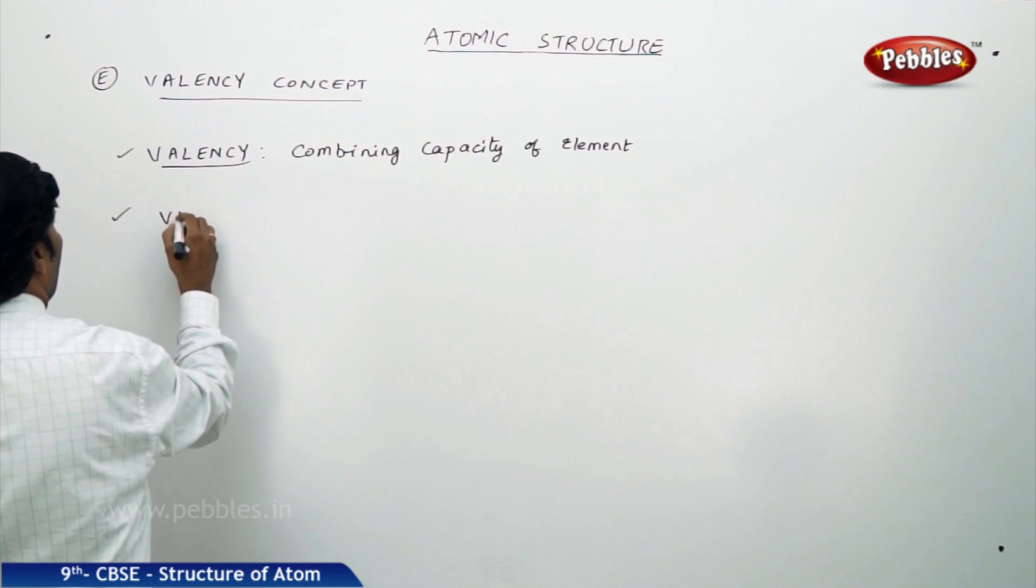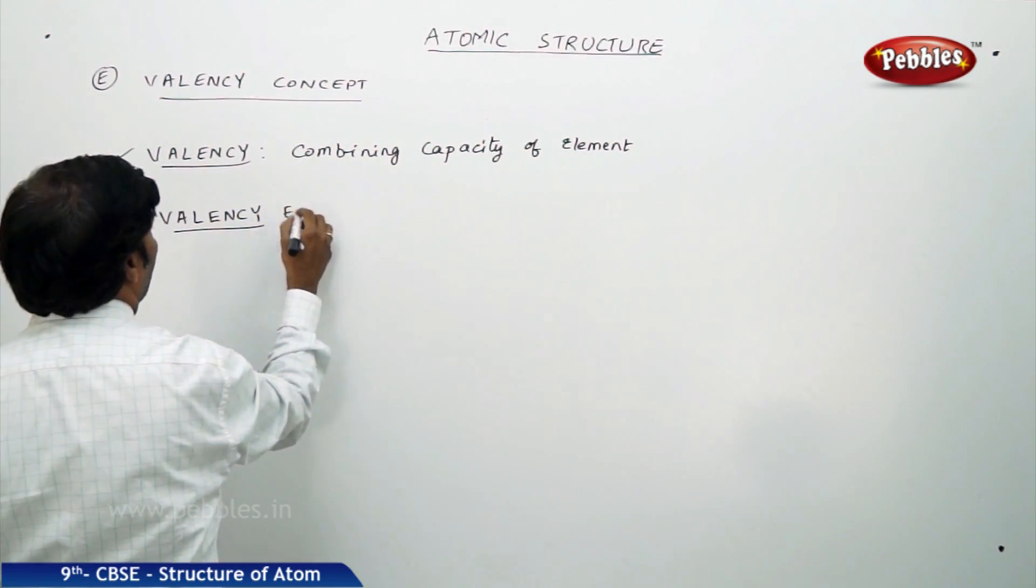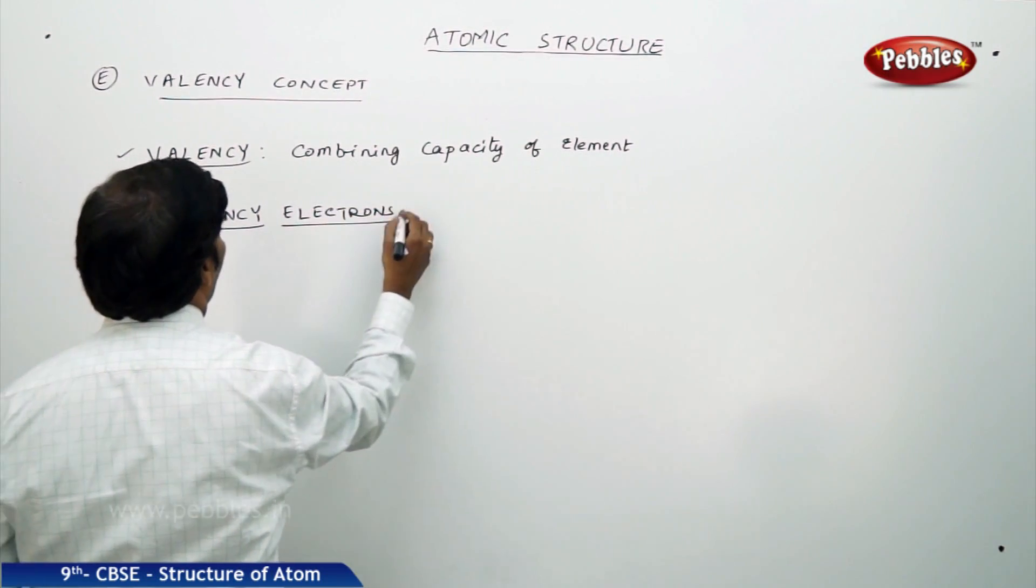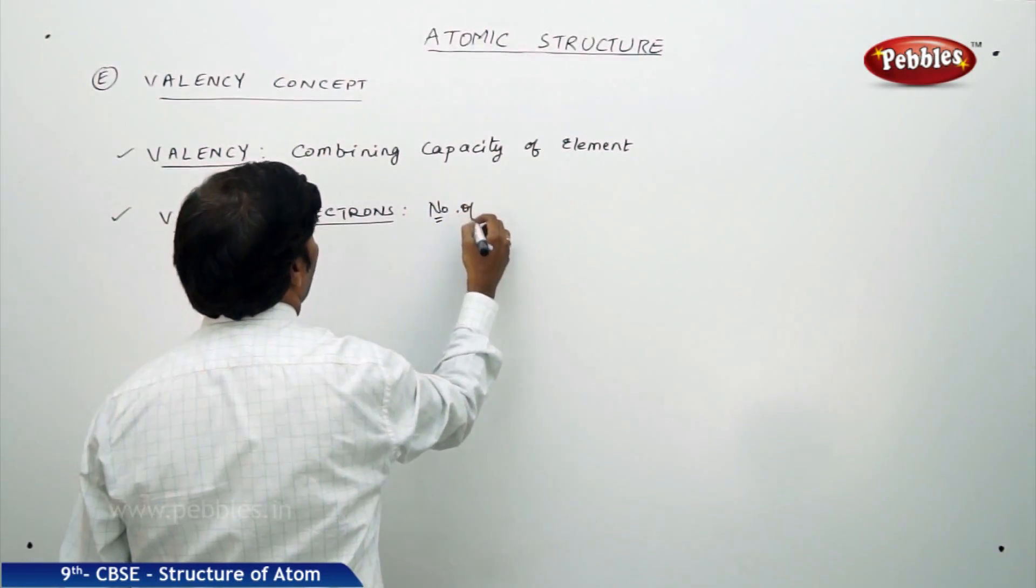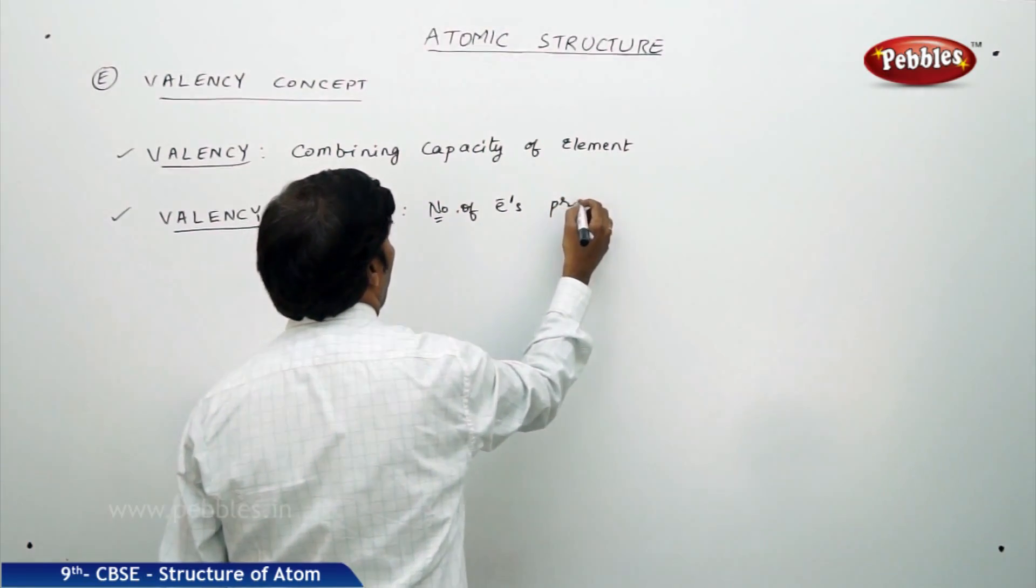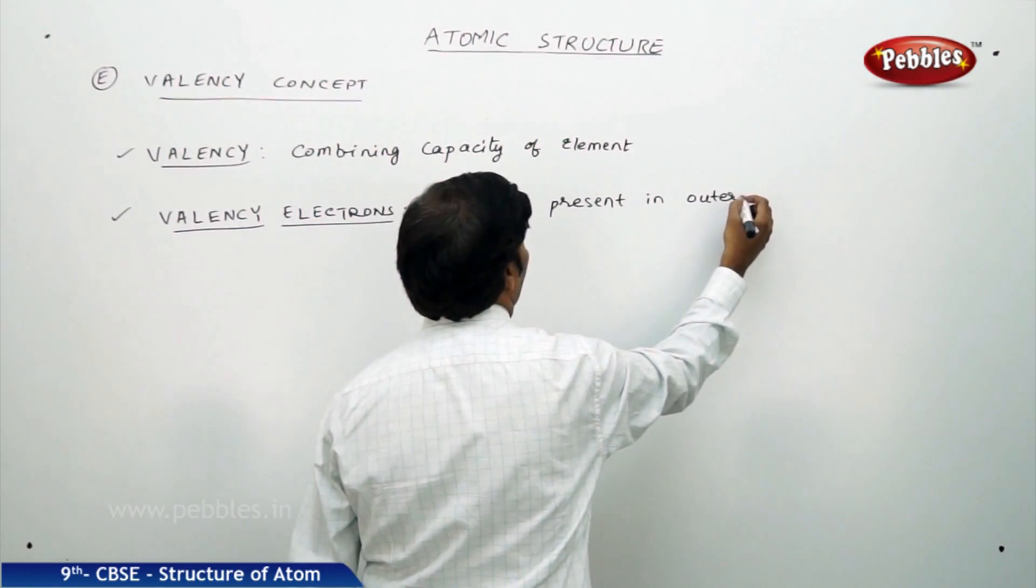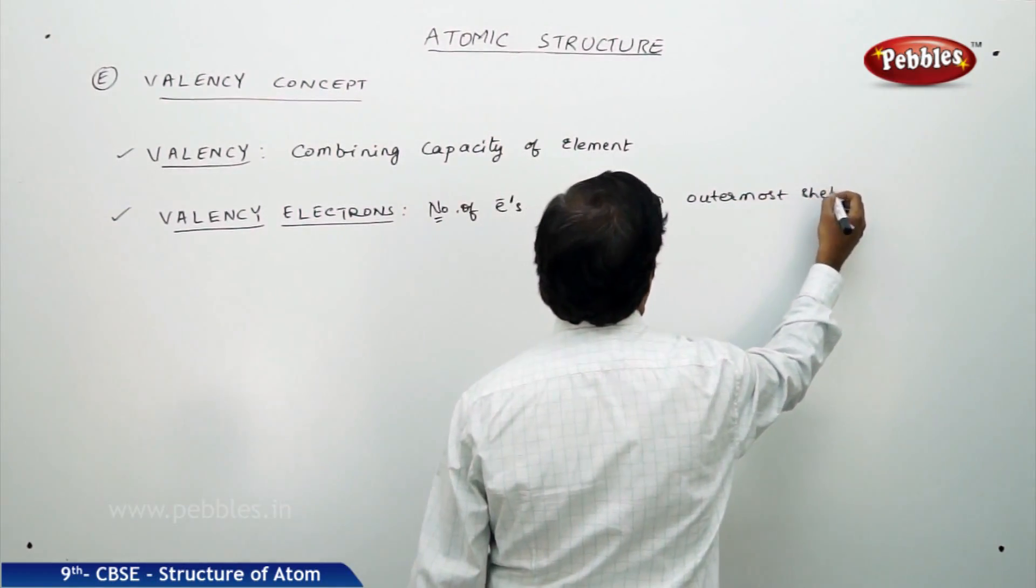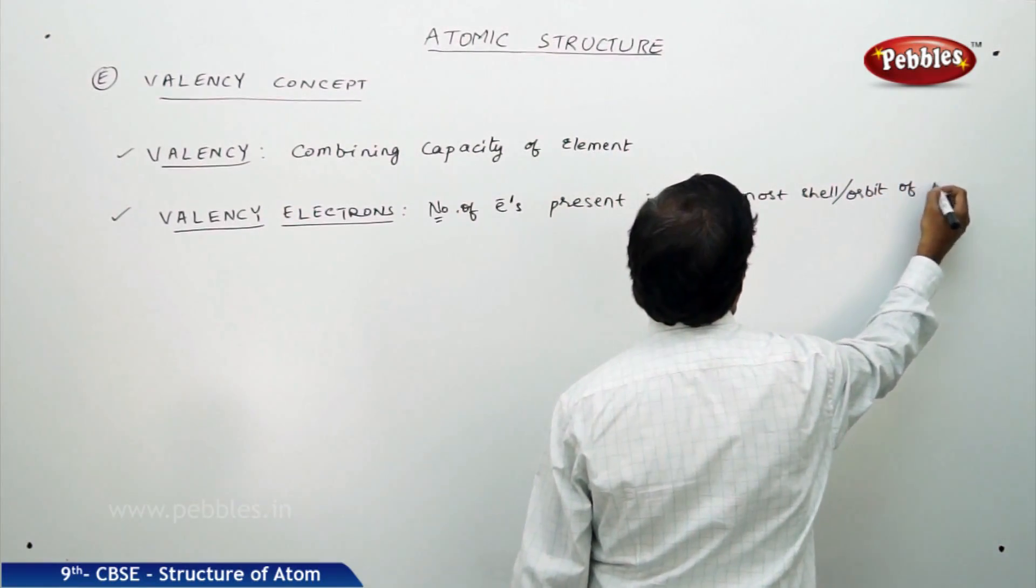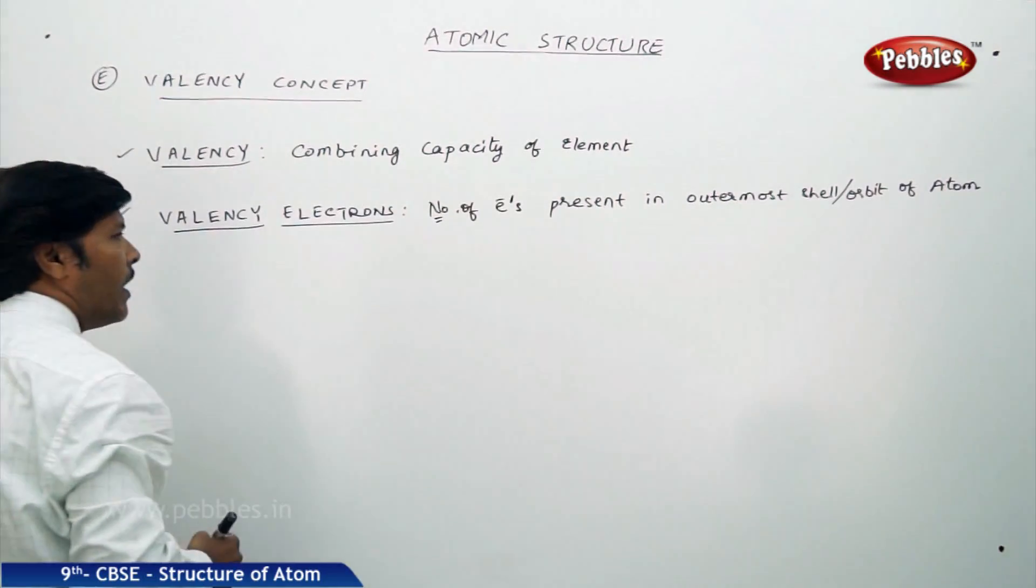Then what do you mean by valency electrons? If you go for valence electrons, number of electrons present in outermost shell or orbit of an atom is called valence electrons.